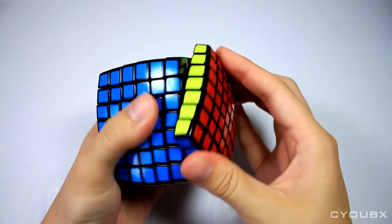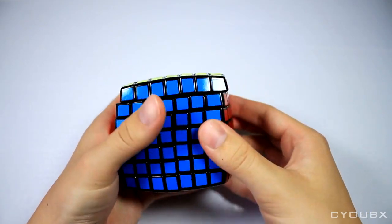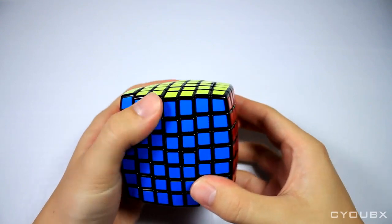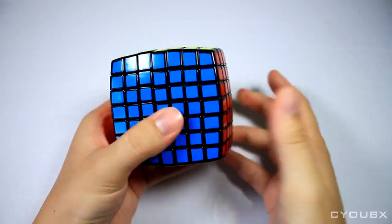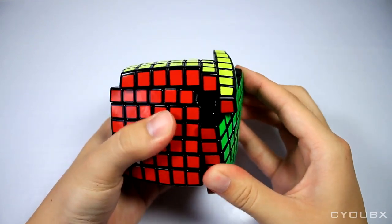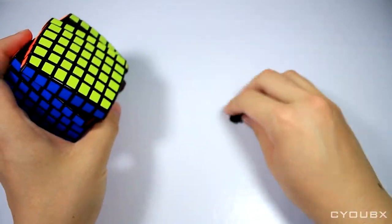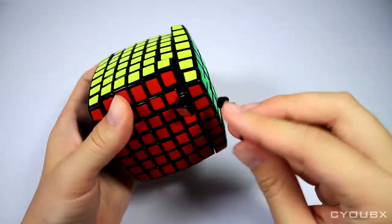The corner cutting on the outer layers exceeds a cubie, and is one cubie elsewhere. Reverse corner cutting is around half a cubie, more than other 7x7s, however keep in mind the cubies are small when we're talking about 7x7s, so the margin of reverse corner cutting we're dealing with here is close to none.